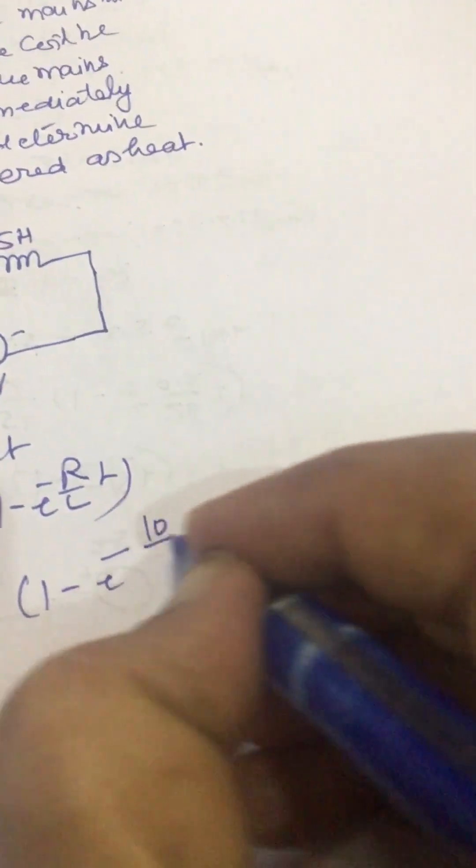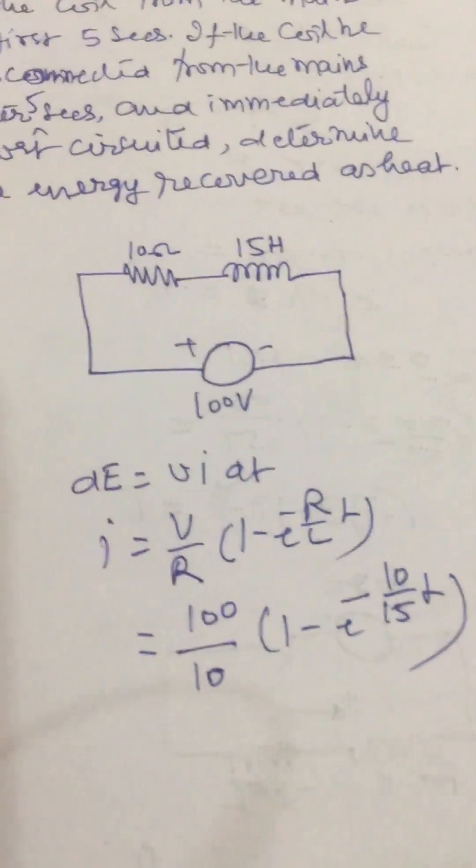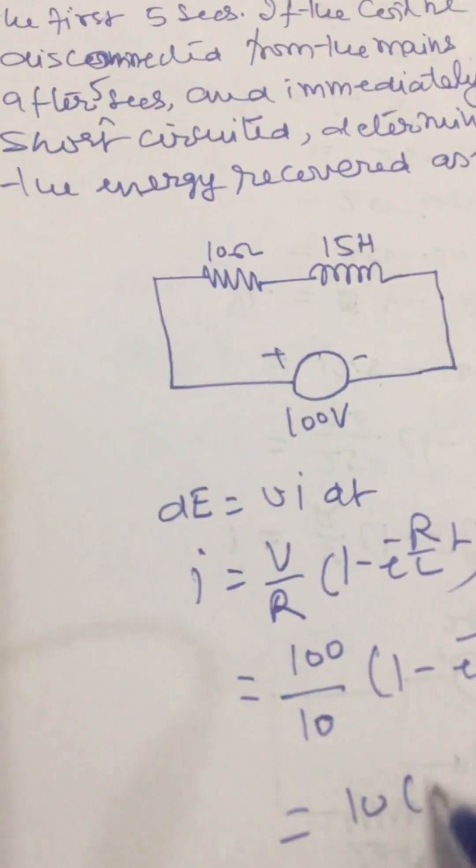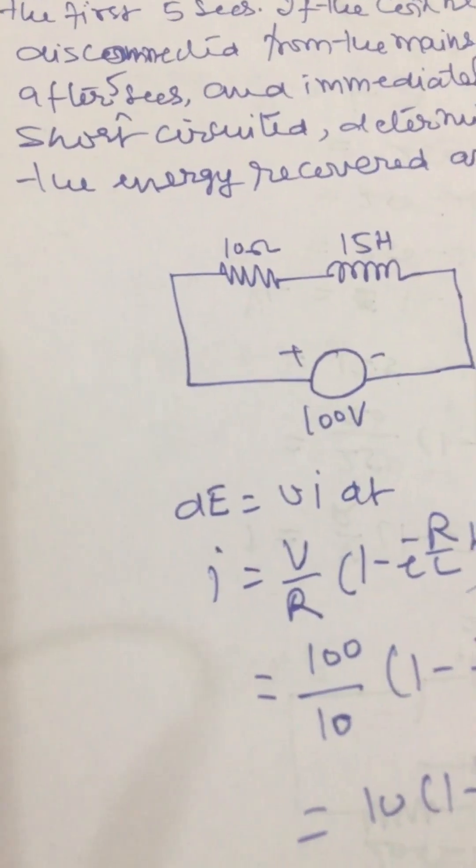We can write this current as 10 times 1 minus e to power minus 2t/3.